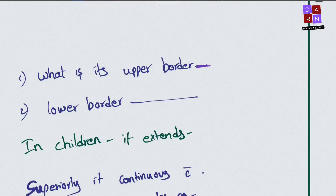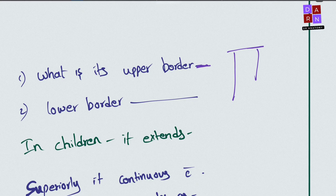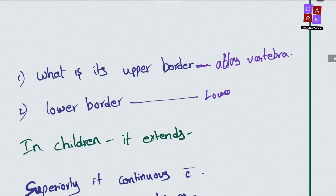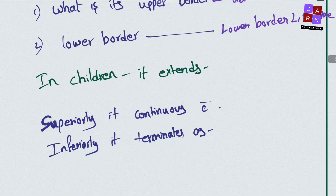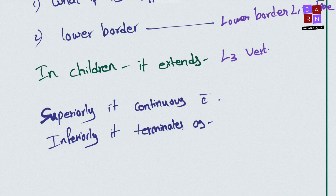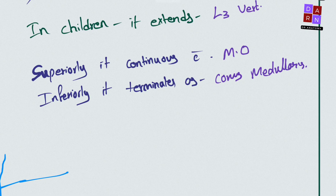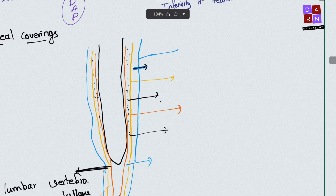Regarding its borders: the upper border begins at the atlas vertebra, and the lower border ends at the lower border of L1 vertebra. In children, it extends up to L3. Superiorly it continues with the medulla oblongata, and inferiorly it terminates as the conus medullaris.